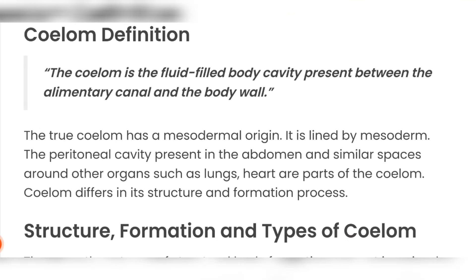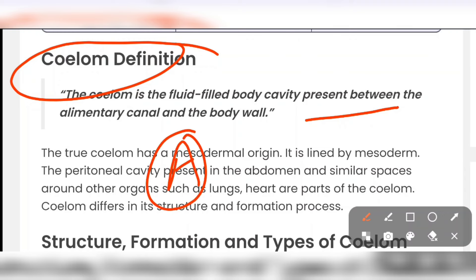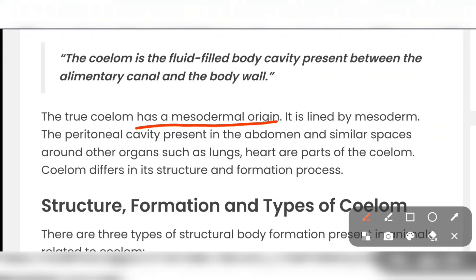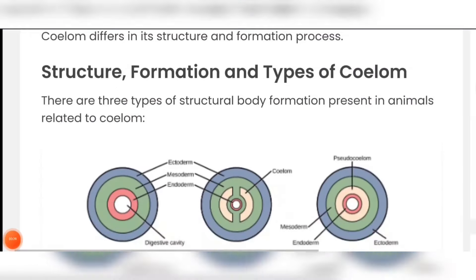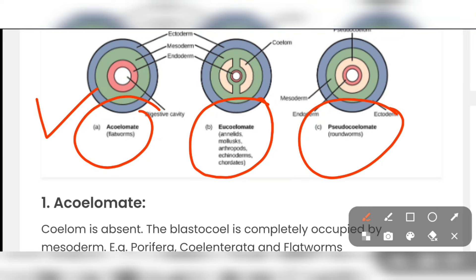If we look at the definition of coelom, coelom is a fluid-filled body cavity that is present between the alimentary canal and body wall. The true coelom has a mesodermal origin. It is lined by the mesoderm. The peritoneal cavity present in the abdomen and similar spaces. So we have three types. We have type one that is acoelomate, then pseudocoelomate, then eucoelomate. Acoelomate is a body having no coelom. Flatworms are examples.